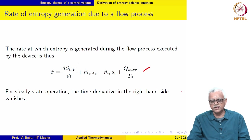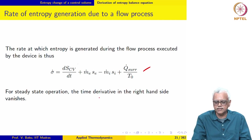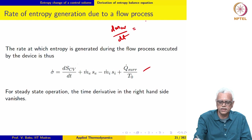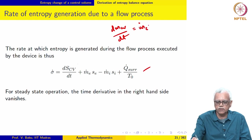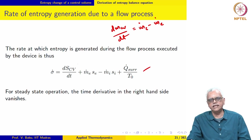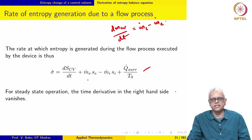In the case of unsteady flow, we also need to invoke the mass conservation equation, which states that the rate of change of mass in the control volume equals ṁᵢ minus ṁₑ — the rate at which mass enters minus the rate at which mass leaves. This equation supplements the entropy balance for unsteady problems.